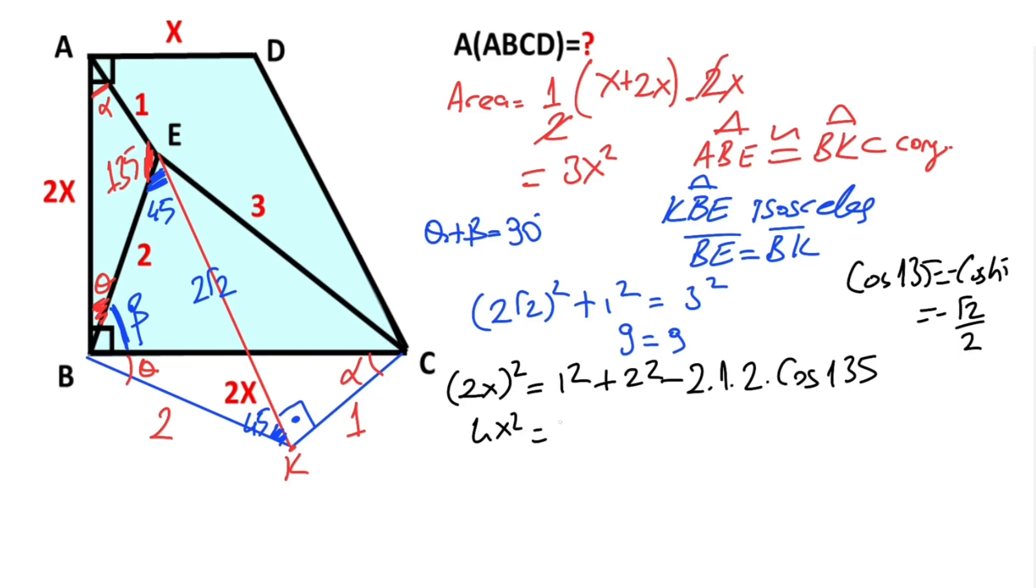Therefore, 4x² equals 1 plus 4 minus 4 times minus root 2 over 2. So 4x² equals 5 plus 2 root 2. Let's simplify. That means x² equals (5 plus 2 root 2) over 4.